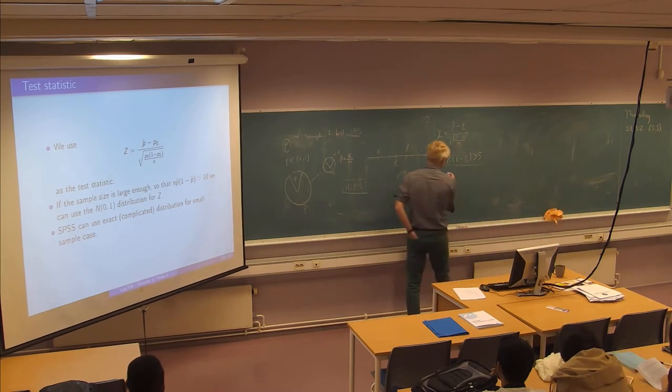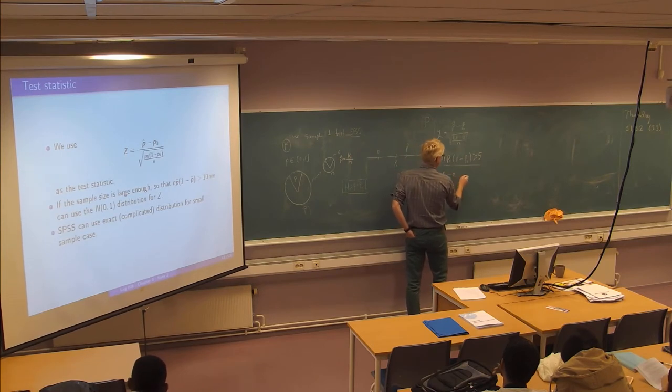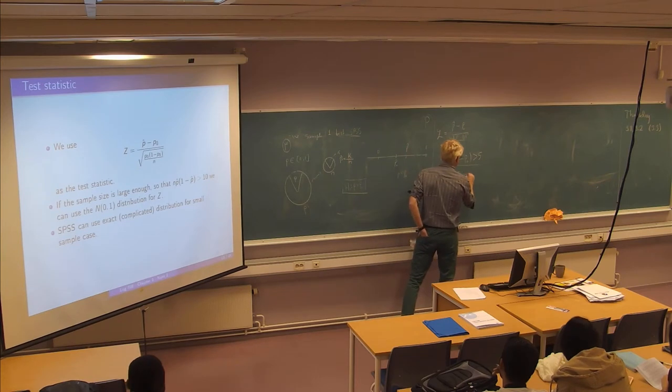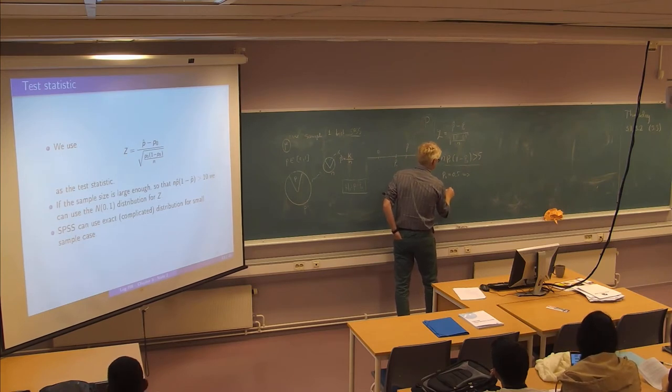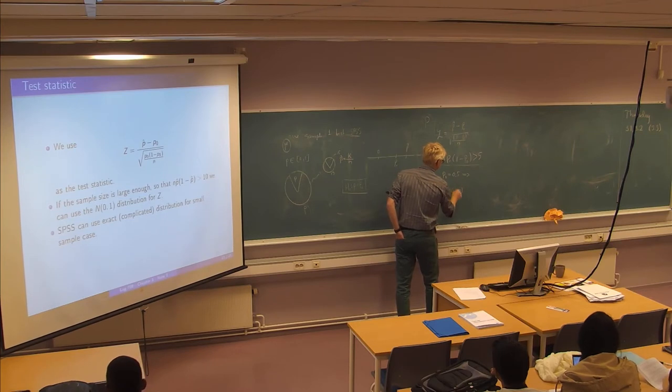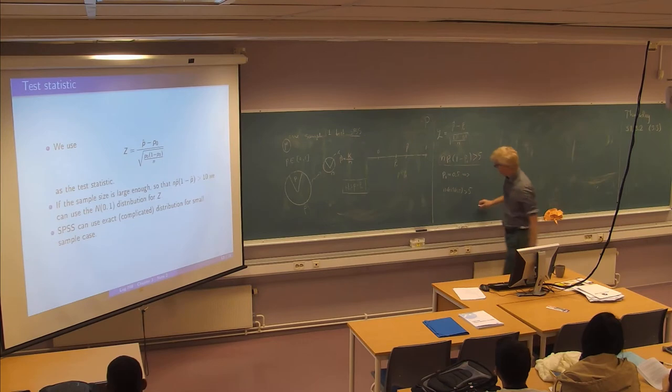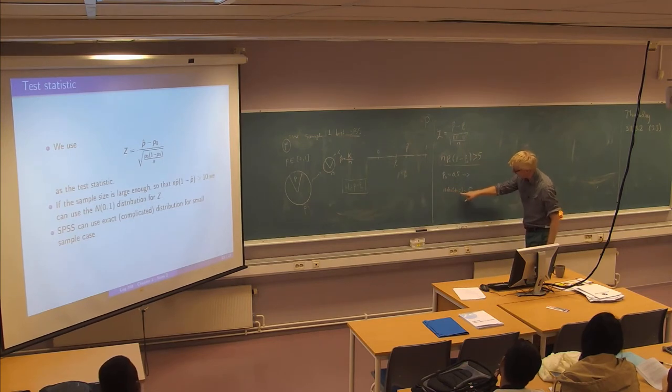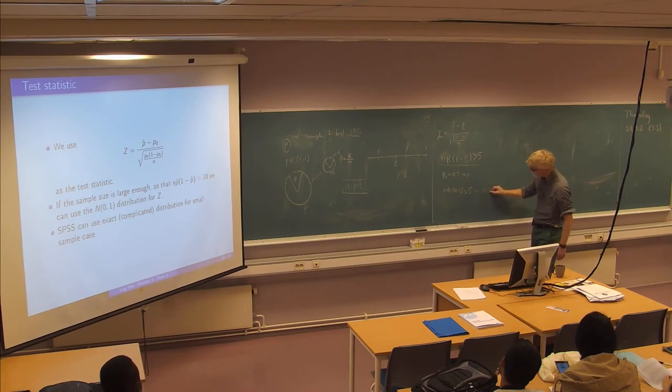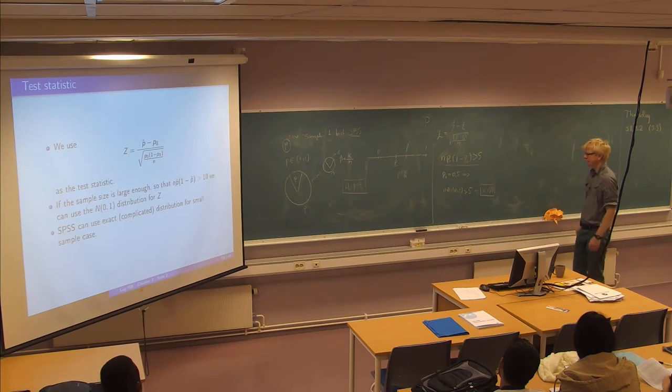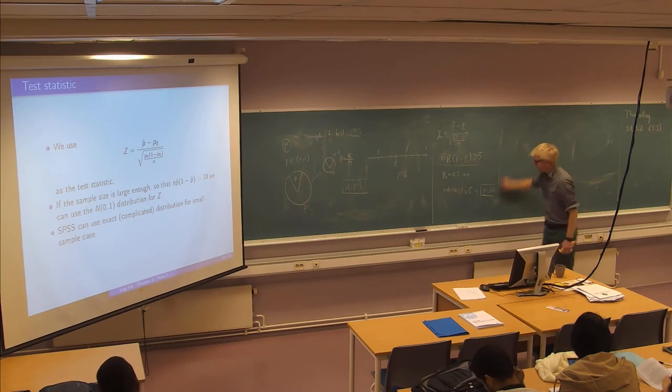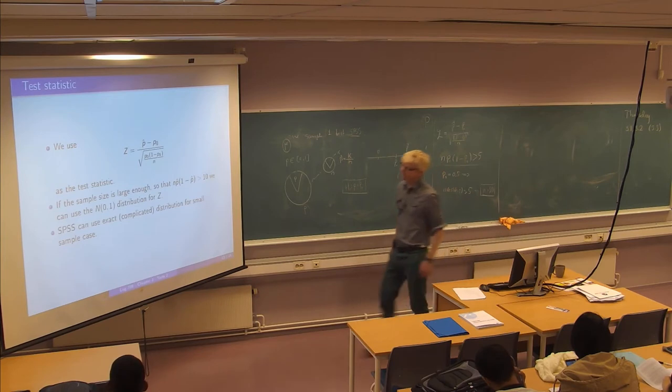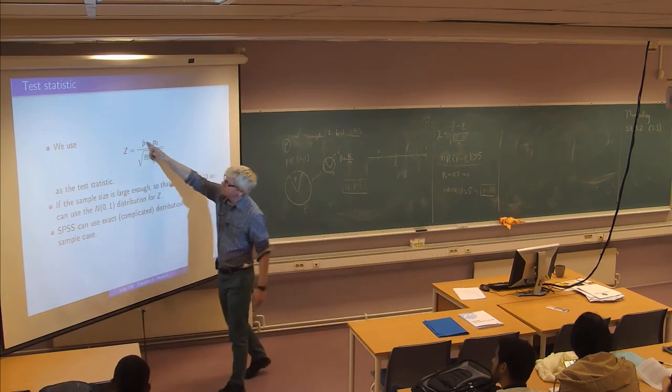So just note that this says, suppose that P0 is 0.5. And what is this requirement actually saying? It's saying that N is greater than, or let's say like this, N times 0.5 times 0.5 is greater than 5. That means, okay, then it says N over 4 greater than 5. It says N greater than 20. So it is a sort of requirement of sample size. That we should not forget entirely. And if we have this property, we will just use the standard normal for this thing.